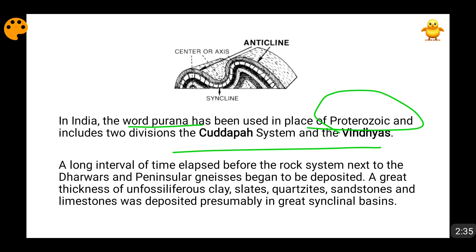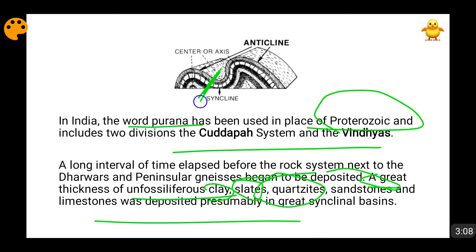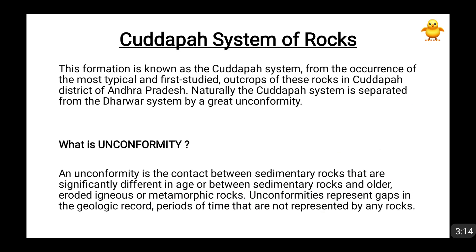Initially, Archean rocks formed. By the weathering of those Archean rocks, sedimentary rocks formed, and the metamorphosed form of those sedimentary rocks became the Dharwar system. Slowly, after the Dharwar system came the Kudappa system — first Archean, then Dharwar, then Kudappa. A great thickness of unfossiliferous — that is, without fossils — clay, slates, quartzites, sandstones, and limestone used to get deposited in synclinal basins, and slowly they converted themselves into what is today named the Kudappa system of rocks.